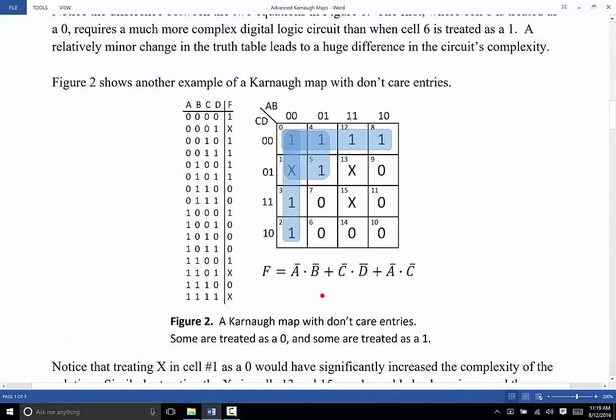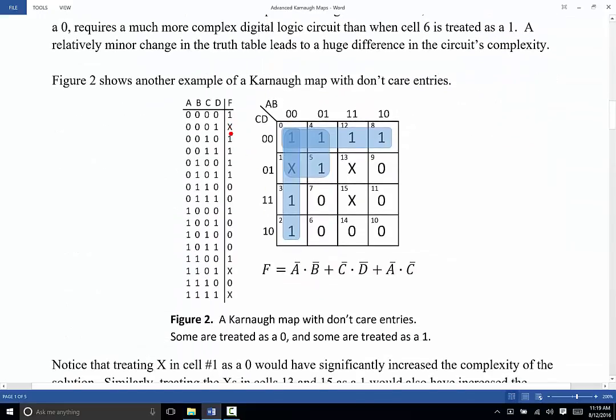Let's look at another quick example here. This time I've given one, two, three don't care entries. And so you can see that when I fill in the Karnaugh map over here from the truth table, I've put in all the cells that are ones, I've put in all the cells that are zeros, and I've put in all the cells that are don't cares.